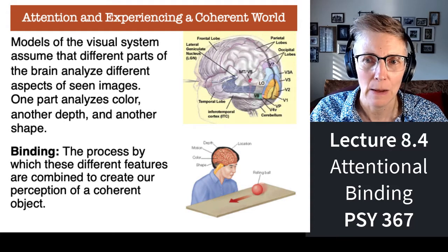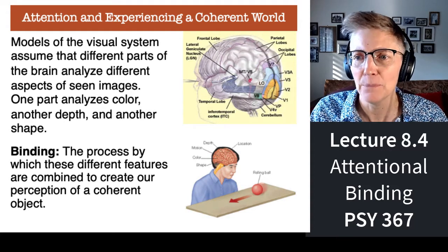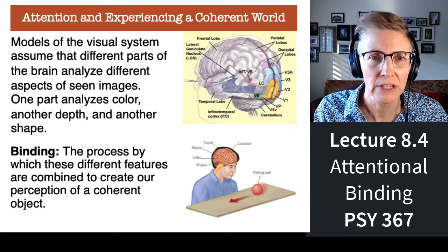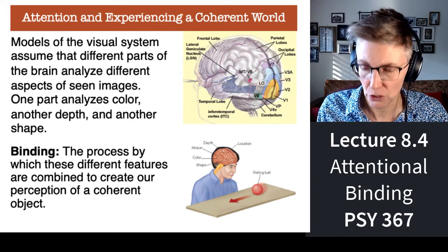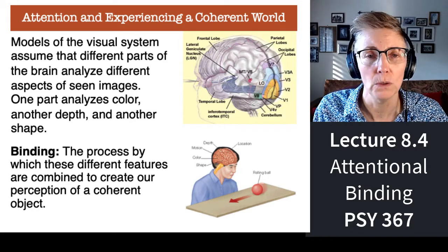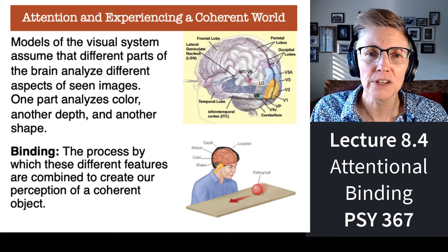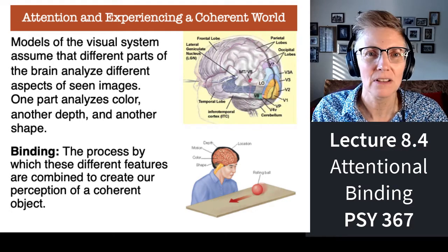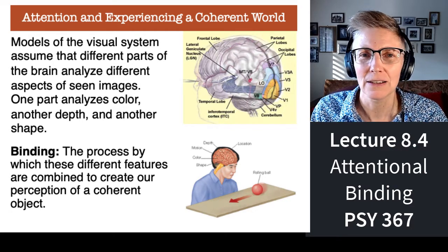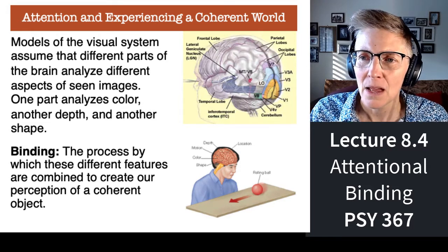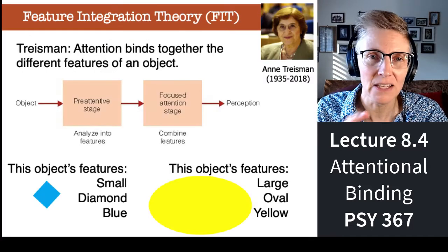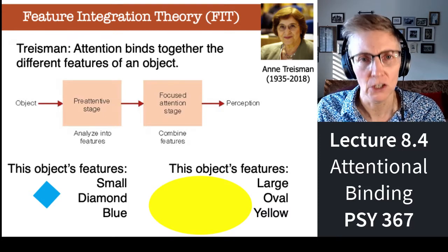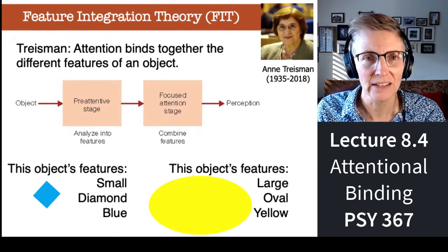We call that binding — the process by which different features are integrated into the perception of a coherent whole. Anne Treisman, who you know from previous lectures and was a tremendous role model for me, had a classic theory of how binding occurs and it relates to attention.